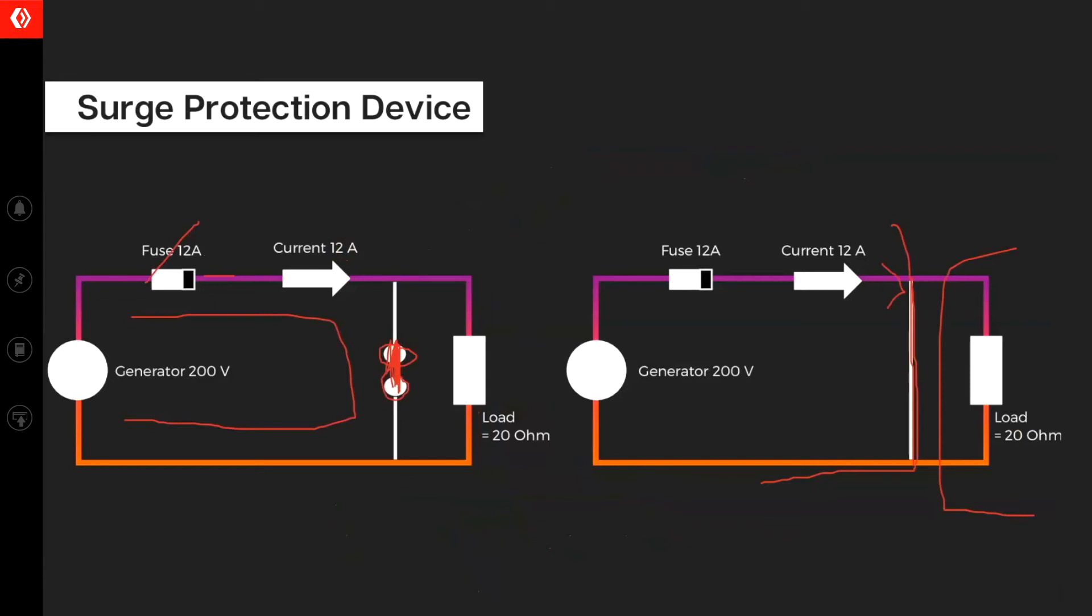So when your fuse blows, circuit is open and by the time your surge has also gone. So basically surge protection device acts first. It protects the main equipment. It causes a heavy current to flow in your circuit due to which your circuit breaker or your fuse will blow. This is how your surge protection device works.